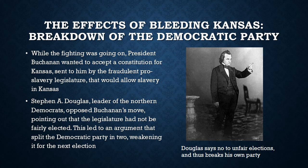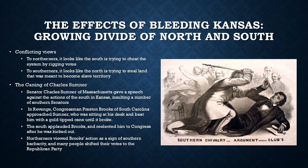This is important because when the Democrats became weak, the Republicans would be stronger and able to win the presidency — which is what would start the Civil War. Another result of Bleeding Kansas is the growing divide between the North and the South, because they had very different views on what was happening. To Northerners, it looked like the South was cheating the system to steal a state they didn't deserve. But to Southerners, it looked like the North was stealing land given to the South by the Kansas-Nebraska Act. Both sides saw the other as cheating.